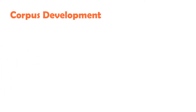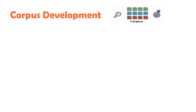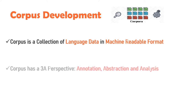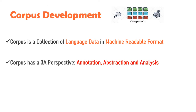A corpus is a collection of language data, either spoken or written in a given language. Corpus has generated a number of research methods attempting to track a path from data to theory. Corpus has a 3A perspective: first, annotation; second, abstraction; third, analysis.